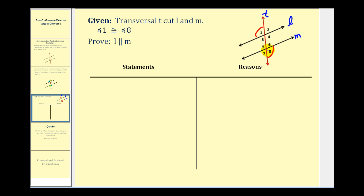Looking at our diagram, we have two options. Notice that angle five and angle eight are vertical angles, and therefore congruent, as well as angles one and four. So using the fact that vertical angles are congruent, we can state that corresponding angles would be congruent, and therefore the lines would be parallel.